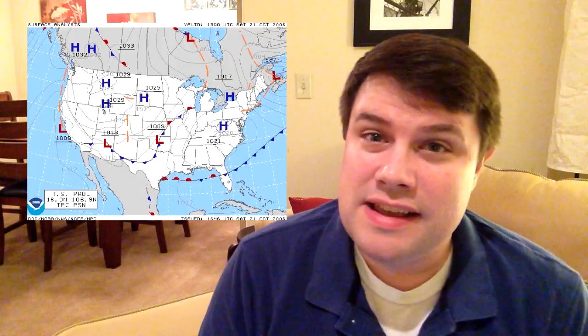Chances are you've probably seen your local weatherman standing in front of a map kind of like this one, talking about the forecast. But what do those big blue H's and those big red L's really mean? The answer is coming up in this edition of Weather 101.